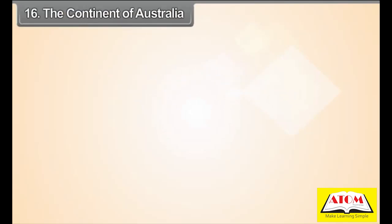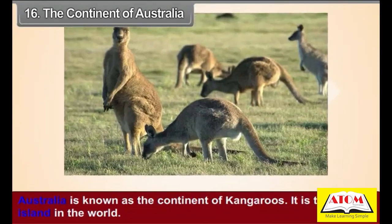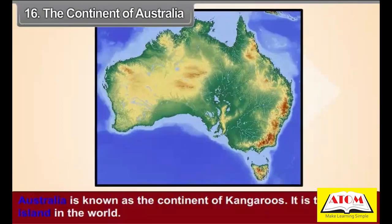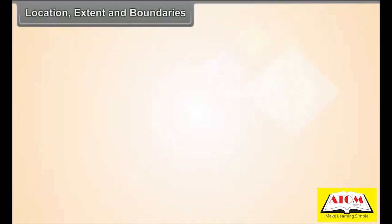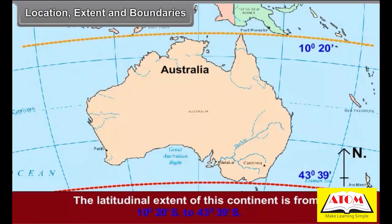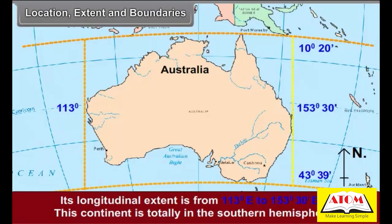Chapter 16: The Continent of Australia. Australia is known as a continent of kangaroos. It is the largest island in the world. The latitudinal extent of this continent is from 10 degrees 20 seconds south to 43 degrees 39 seconds south. Its longitudinal extent is from 113 degrees east to 153 degrees 30 seconds east.